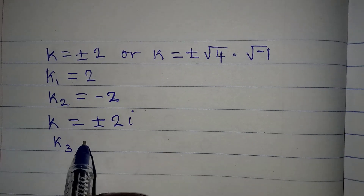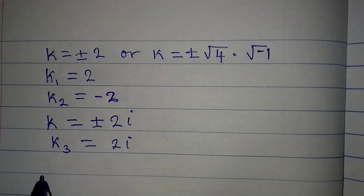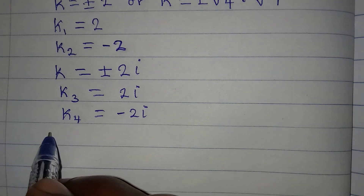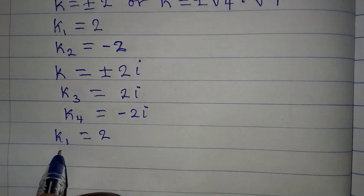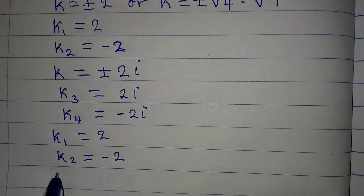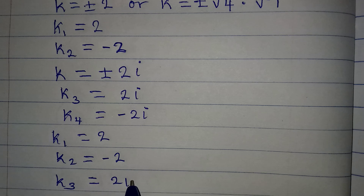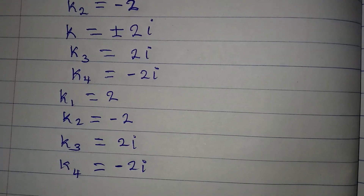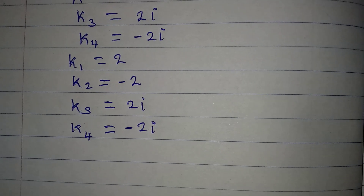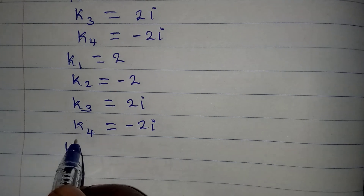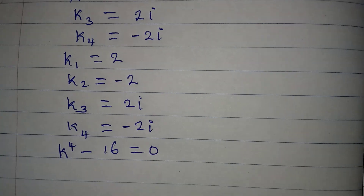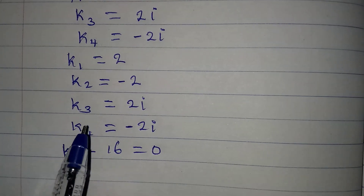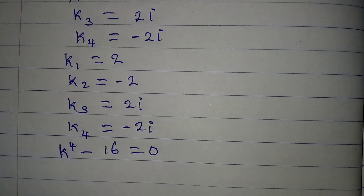Bringing all four solutions together: k1 equals 2, k2 equals negative 2, k3 equals positive 2i, and k4 equals negative 2i. Going back to the original equation k to the power of 4 minus 16 equals zero — if you want to check your answers, it will work perfectly for k1 and k2, but k3 and k4 are imaginary. Thank you for watching.